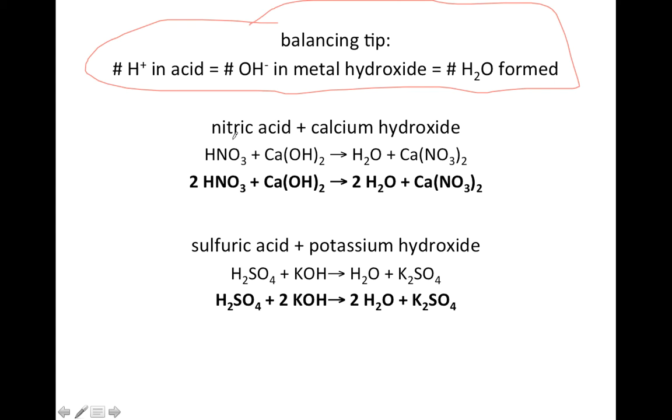Next example: nitric acid and calcium hydroxide. Nitric acid is HNO3 and calcium hydroxide is Ca(OH)2 because calcium is +2 and hydroxide is -1. So we know one product is water. The other product, we look at the metal cation. Calcium is column two, so it's +2. The anion from the acid, nitrate, is -1, so to get a neutral formula, you get Ca(NO3)2 to make it neutral.